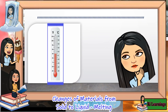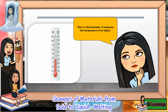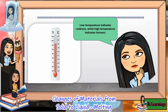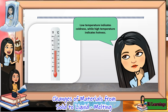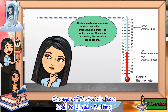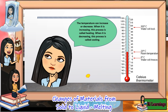Do you know what this is? Very good! This is a thermometer. A thermometer is used to measure the temperature of an object. Have you seen one? Yes teacher! Remember that low temperature indicates coldness while high temperature indicates hotness. The temperature can increase or decrease. When it is increasing, this process is called heating. When it is decreasing, this process is called cooling.